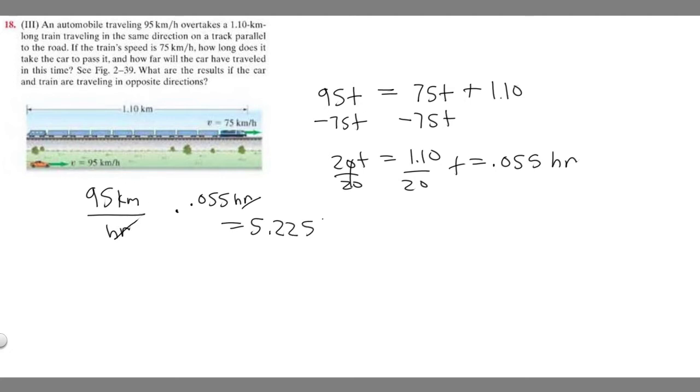Keep in mind this is in kilometers. So this is how far the car traveled, and this is how long it took. Now let's swap this up and say the car and train are traveling in opposite directions. Essentially we're just going to create the same equation, but now they're traveling in opposite directions.